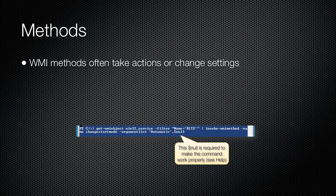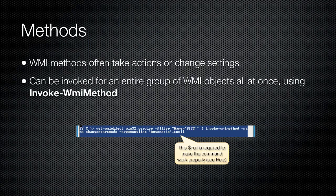Sometimes a method may allow you to invoke it without specifying some arguments. For example, a method that can reconfigure 10 different settings might allow you to omit any settings you do not want to change. In those instances, Windows PowerShell usually requires you to specify the special $null constant for the argument, rather than providing a normal value. The Invoke-WMIMethod is one way to invoke WMI methods.